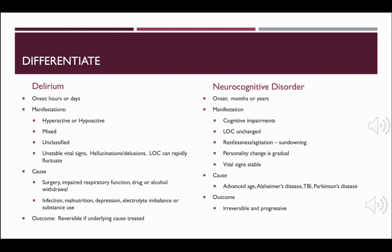A neurocognitive disorder, on the other hand, is irreversible and progressive. A person with a neurocognitive disorder experiences gradual deterioration over months or years — much slower onset than delirium. Manifestations include impairments in memory, judgment, and speech. Individuals may have difficulty recognizing familiar objects like faces of family members. They struggle with executive functioning and movement, and impairments don't fluctuate throughout the day. Level of consciousness is usually unchanged. Restlessness, agitation, and sundowning can occur, but personality change is gradual and vital signs are stable unless there is another illness.